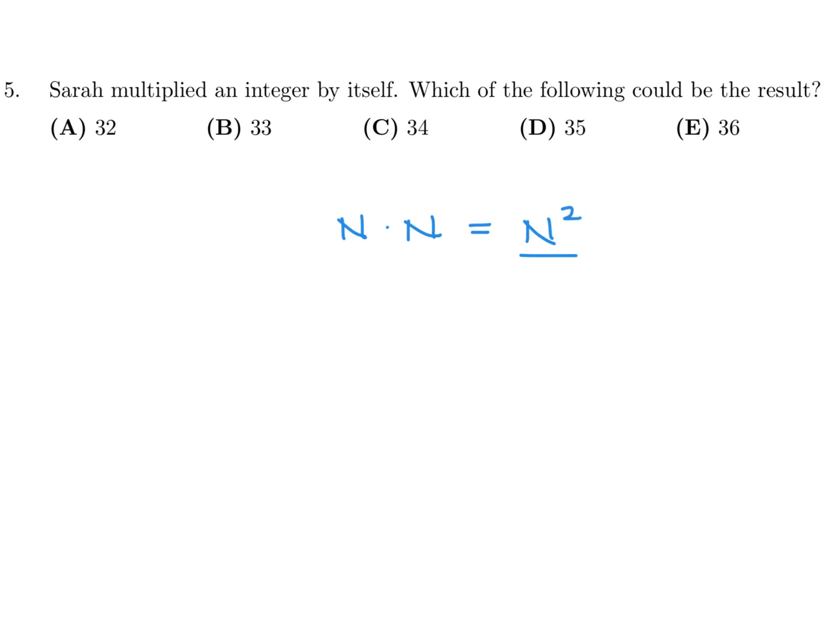So it's basically like me asking you which one of these numbers is a perfect square. And I think you guys can figure that out. It would be this one right here, because that's 6 squared. And therefore, number 5 is E.